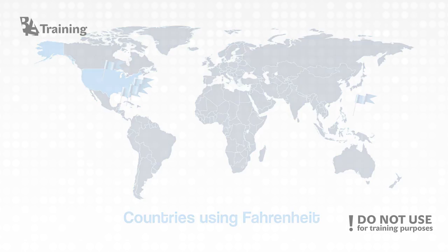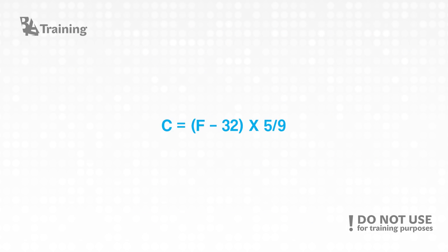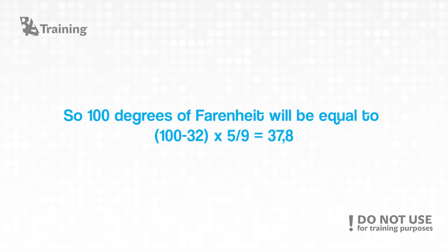One way to convert Fahrenheit to Celsius is using a formula where Celsius equals Fahrenheit subtract 32 and multiply by five ninths. So 100 degrees Fahrenheit will be equal to 100 subtract 32 and multiply by five ninths, equals to 37.8 degrees in Celsius.